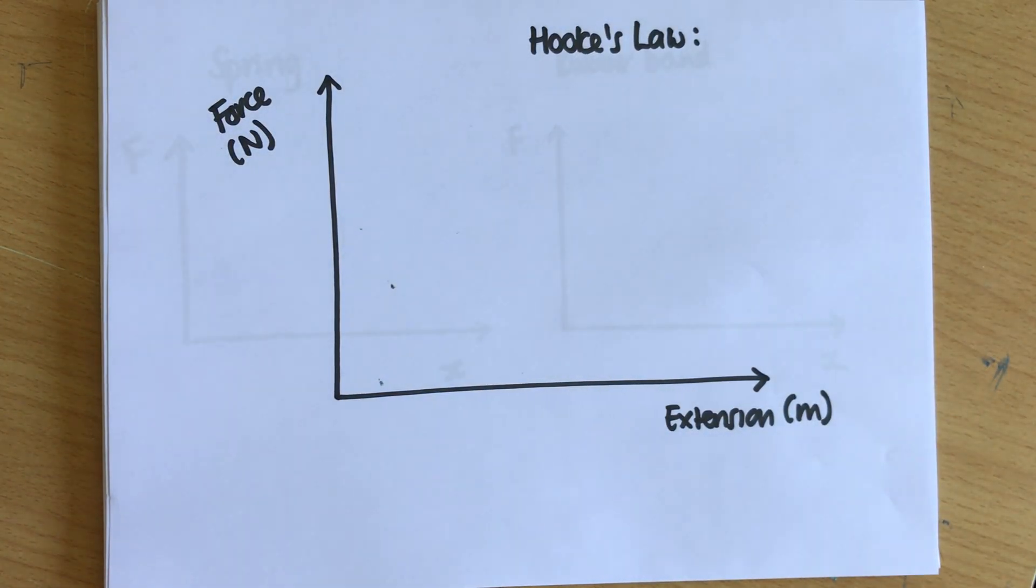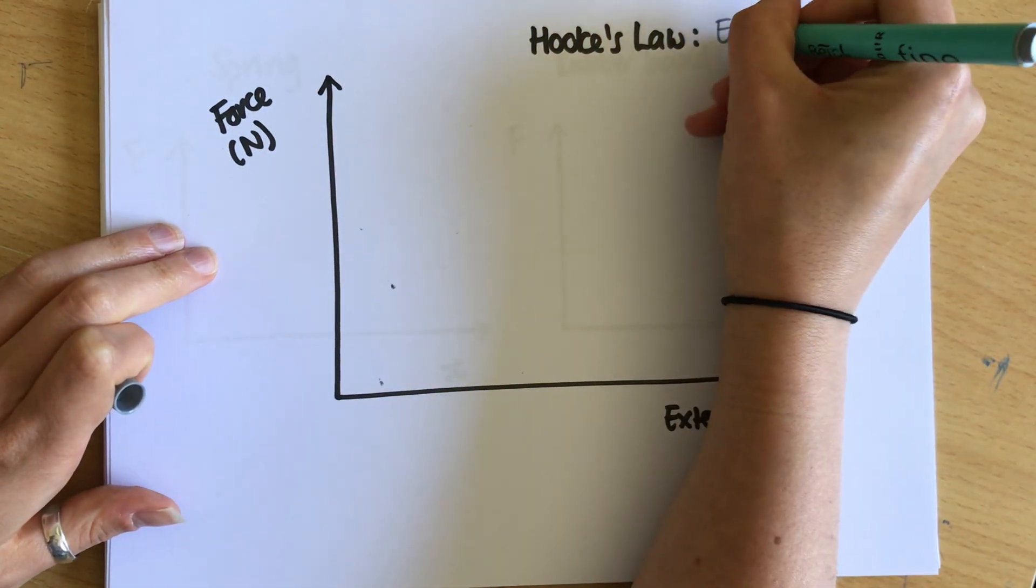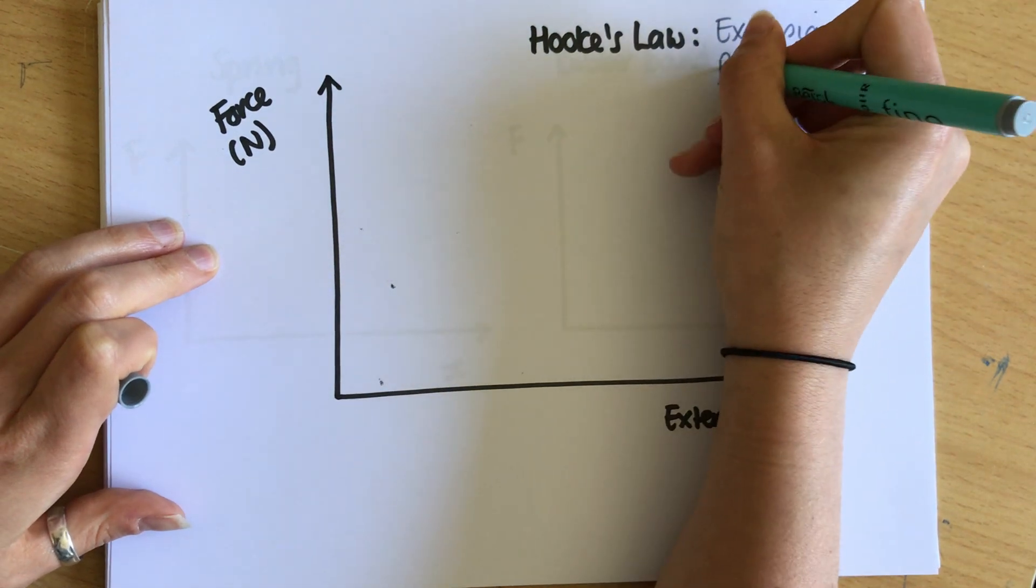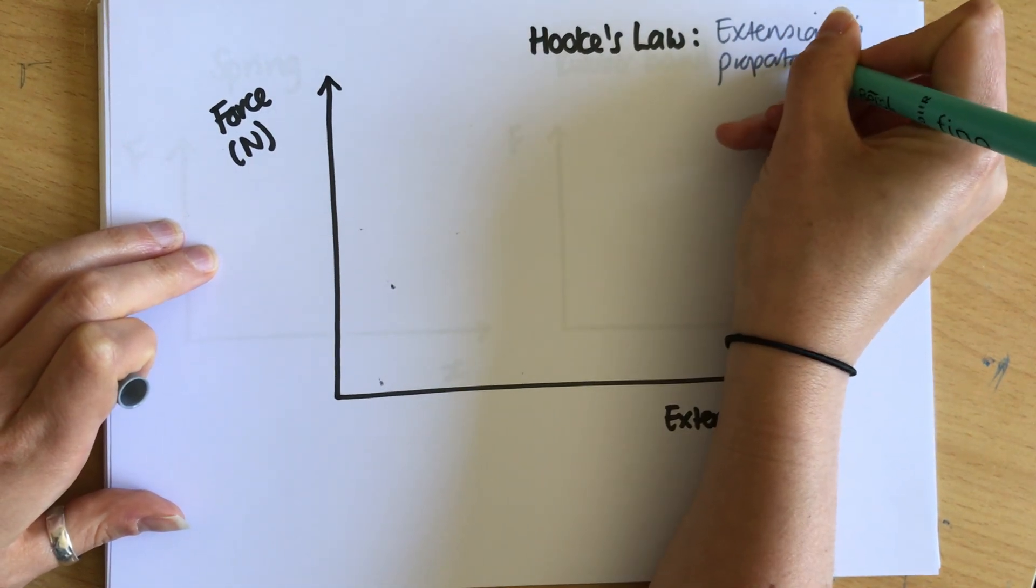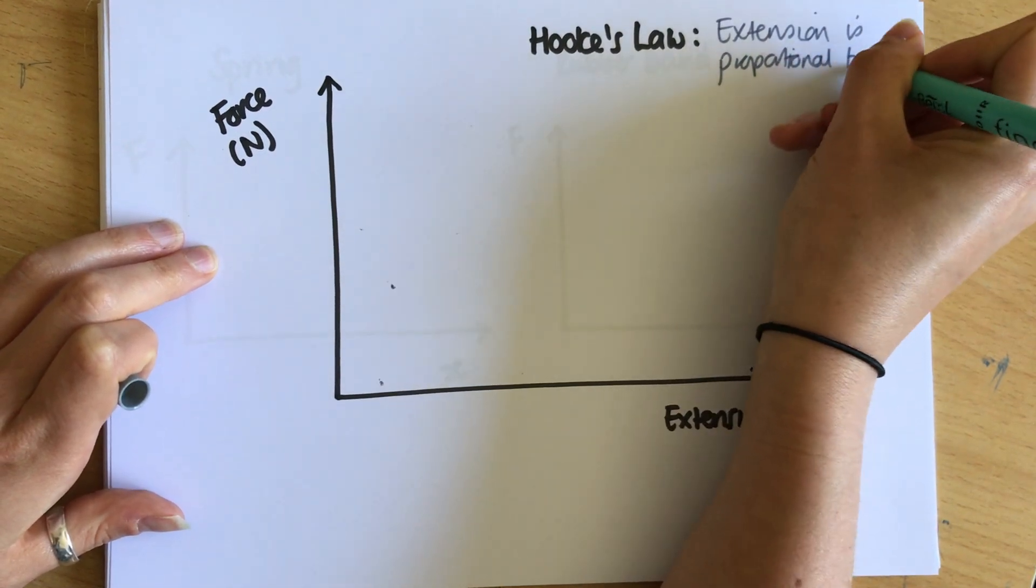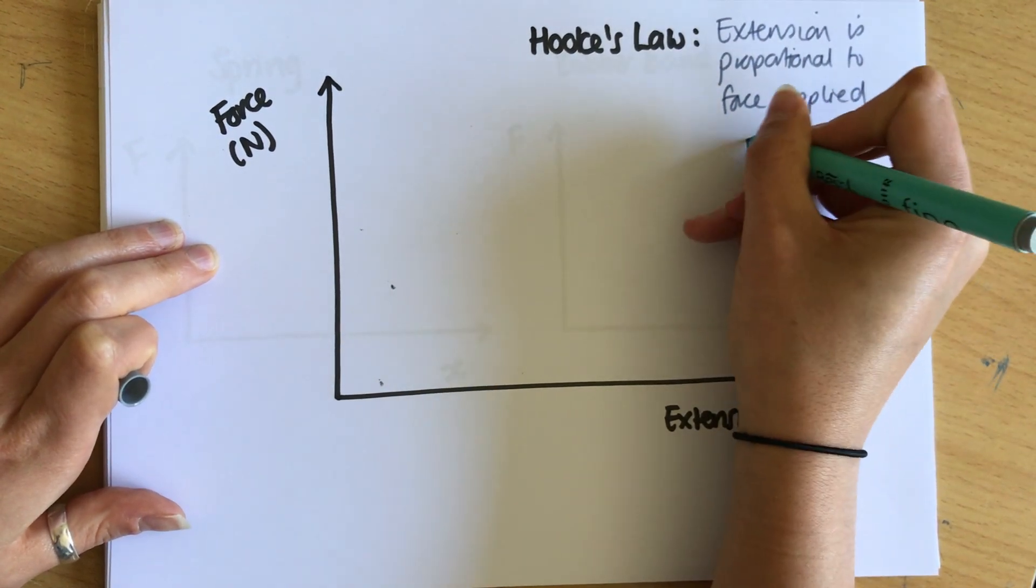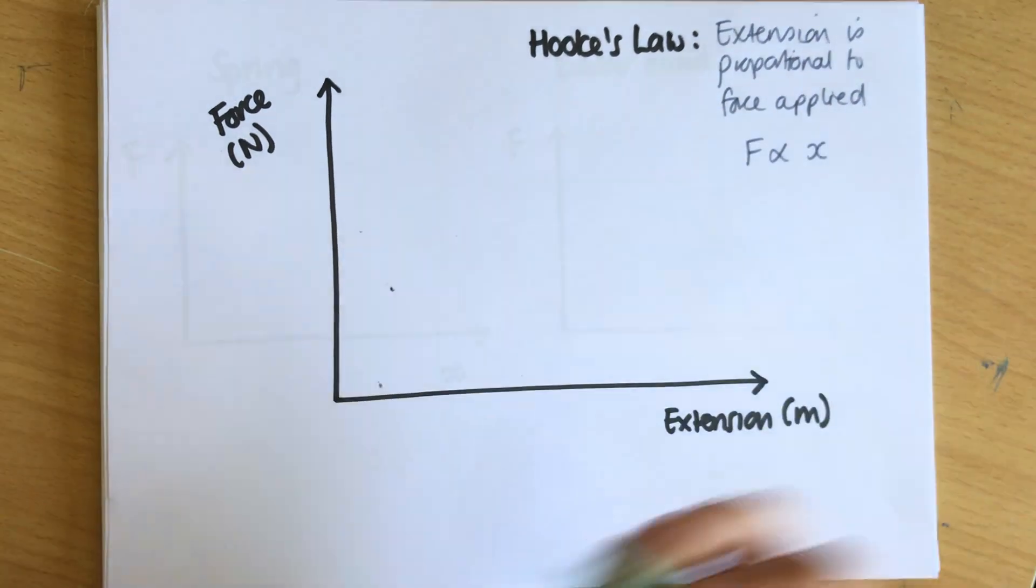Now Hooke's law is this: the extension is proportional to the force applied, or that F is proportional to X.